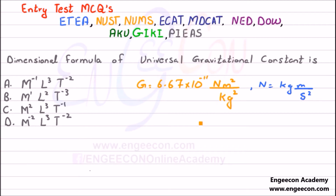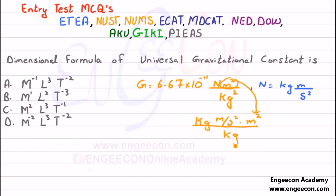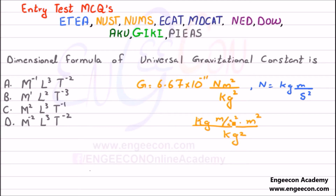So we can write G as kilogram·meter per second² times meter² divided by kilogram². If we move kilogram and second from the denominators into the numerators, the units become kilogram raised to power minus 1.